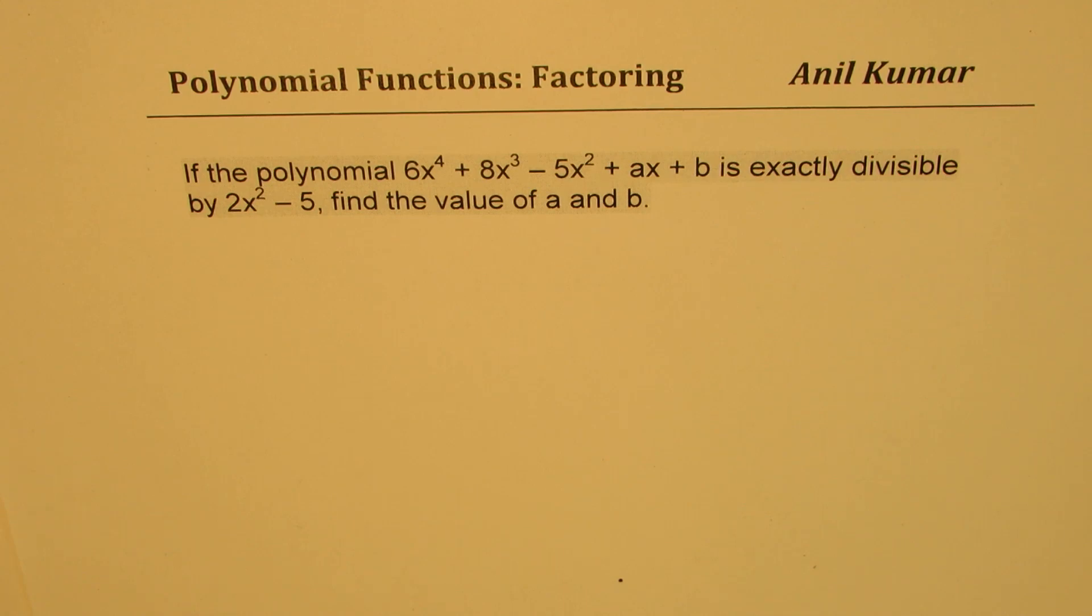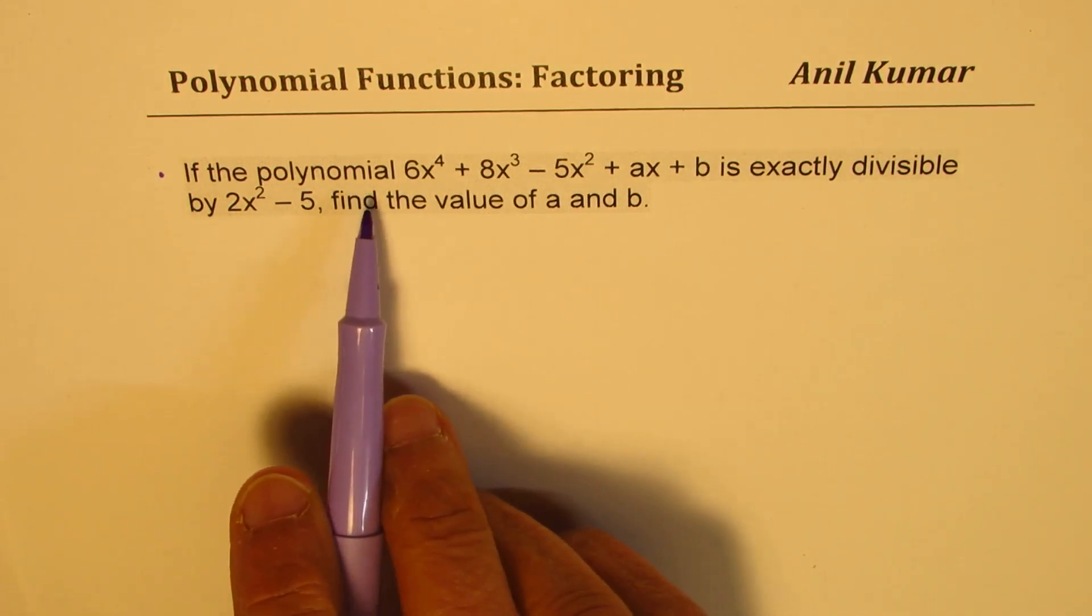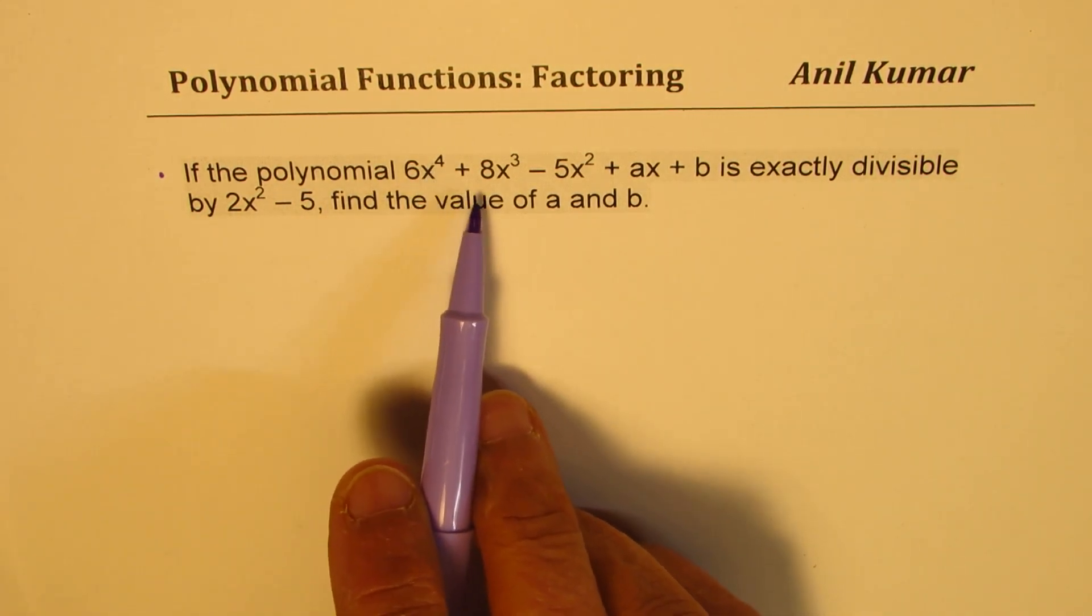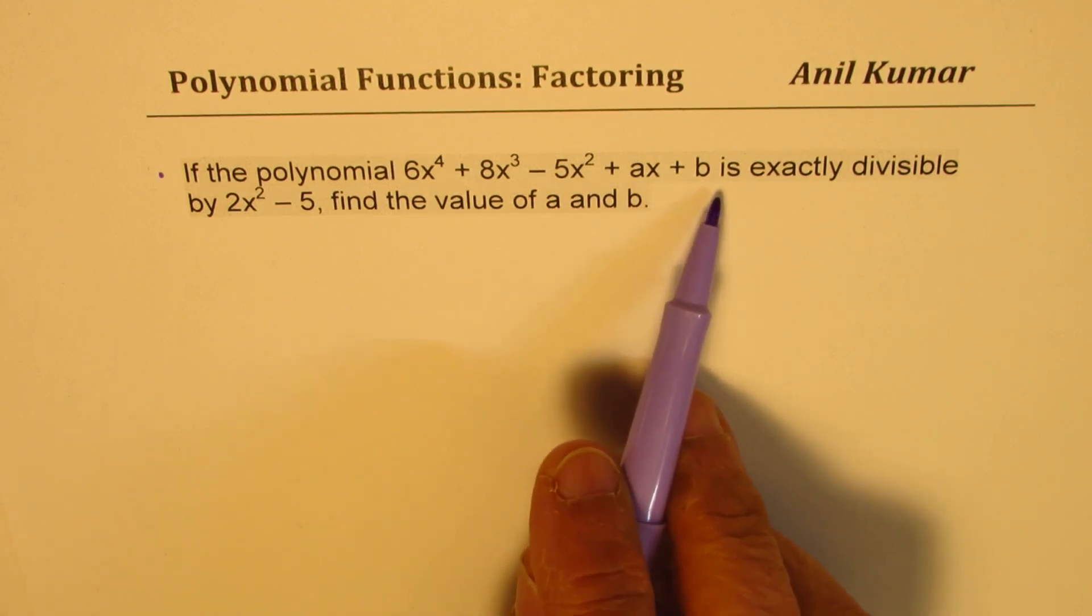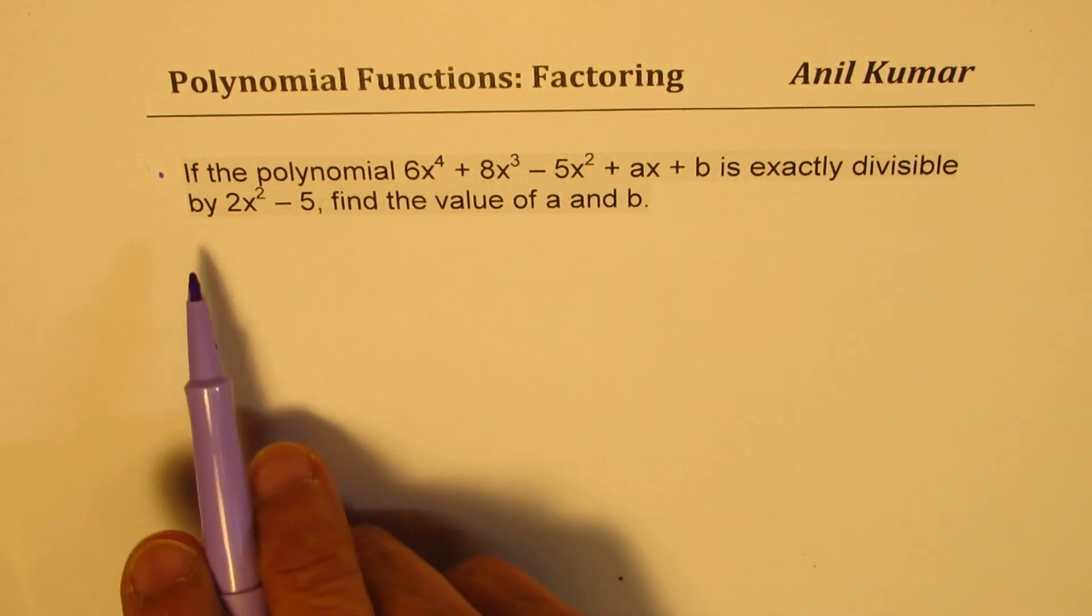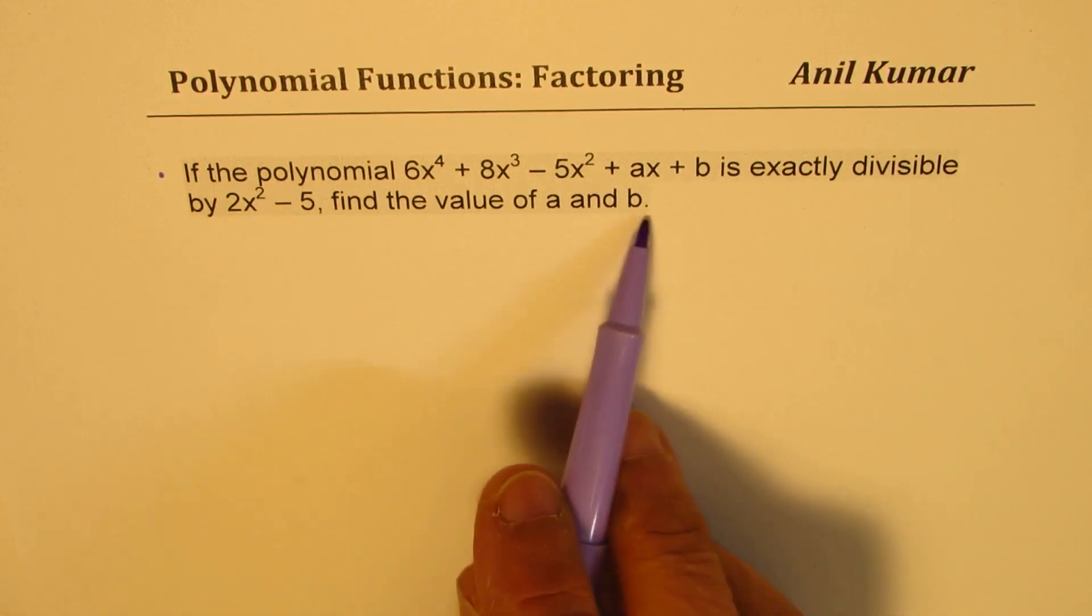The question here is: if the polynomial 6x to the power of 4 plus 8x cubed minus 5x squared plus ax plus b is exactly divisible by 2x squared minus 5, find the value of a and b.